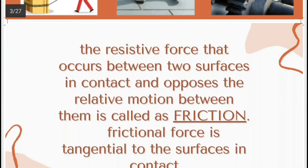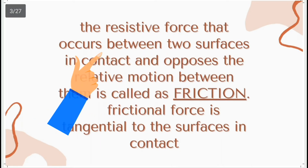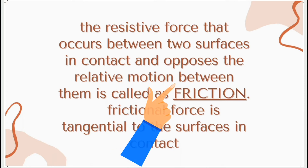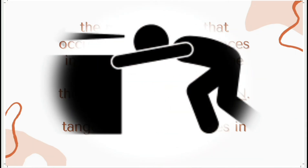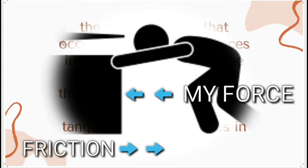Now let us see its definition. The resistive force that occurs between two surfaces in contact and opposes the relative motion between them is called friction. It means when two objects are in contact and we apply force on them, friction is a phenomenon that will resist the applied force. If we are trying to push the object and the object is not changing its position, then there is some force opposing the applied force — that force is called friction.